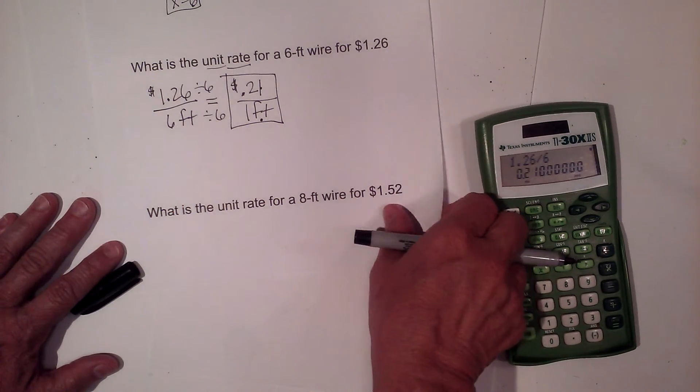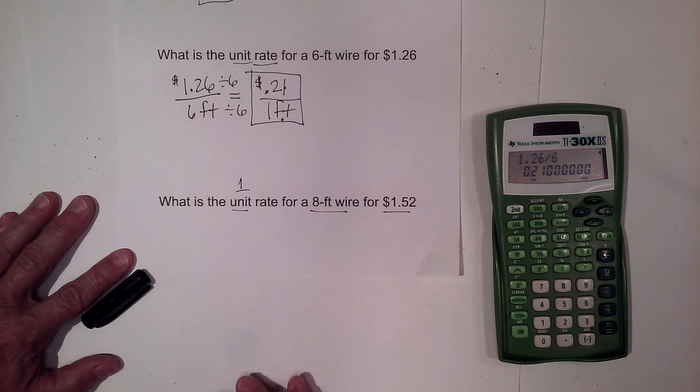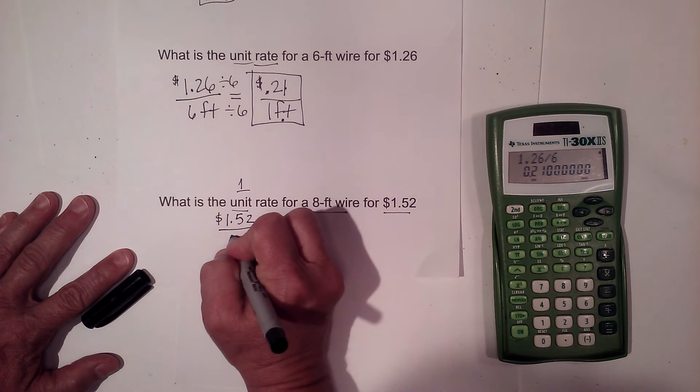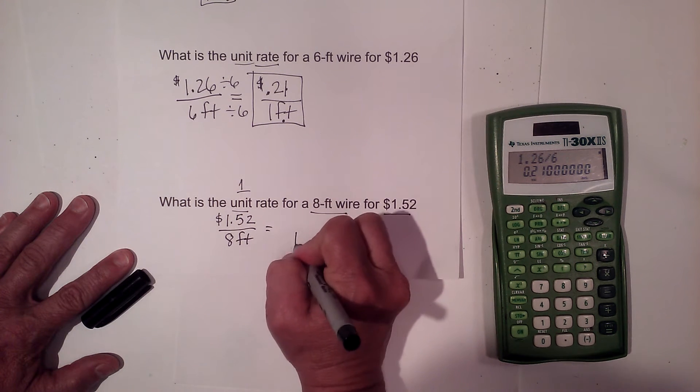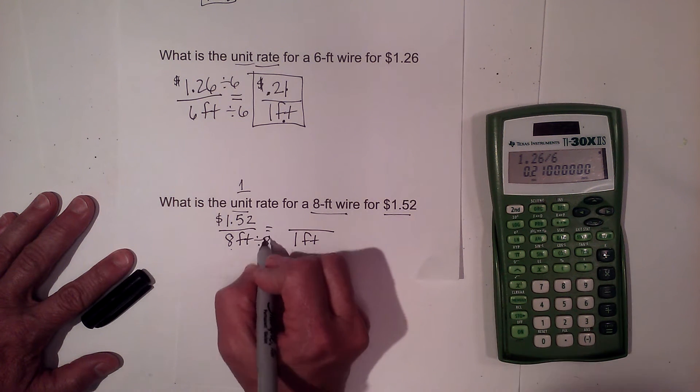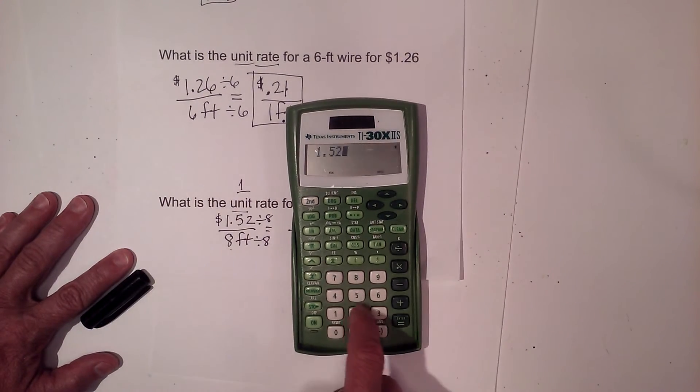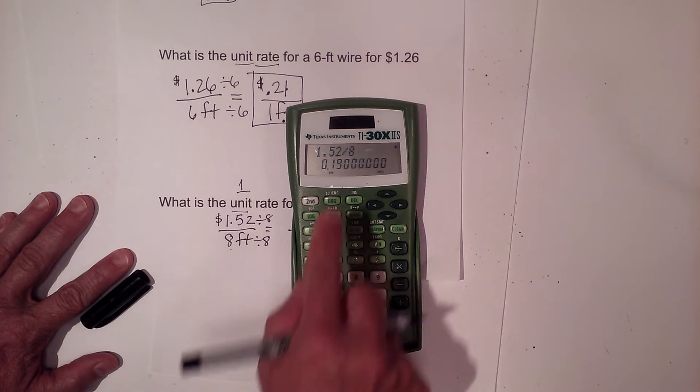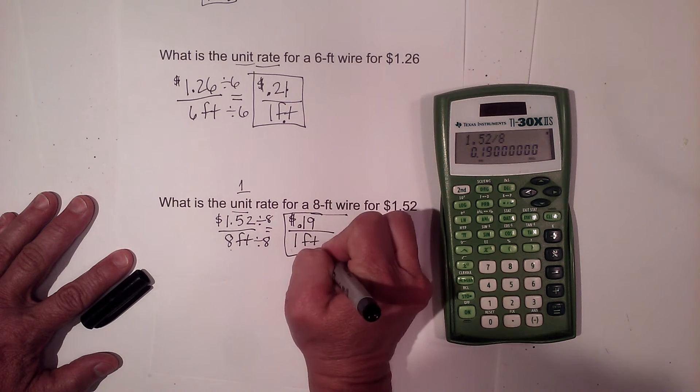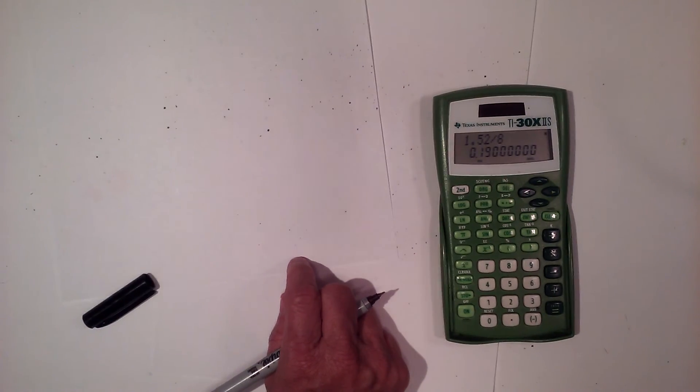Let's try a second unit rate problem. What is the unit rate for 8 feet of wire that costs $1.52? So I'm going to set up my proportion. I have $1.52 on top, and I have 8 feet on the bottom. I want to know the cost of one foot, because that is one unit. So I've taken 8 feet and divided by 8. So I'm going to take $1.52 and divide it by 8. And we see that is .19, which is 19 cents. So that's my unit rate.